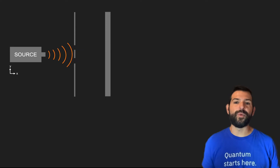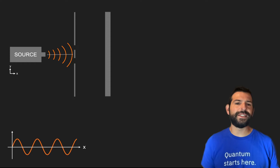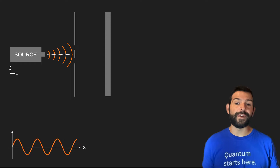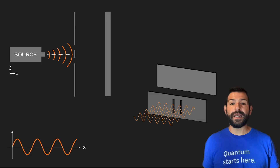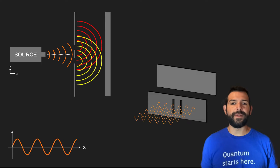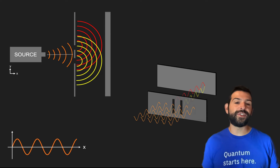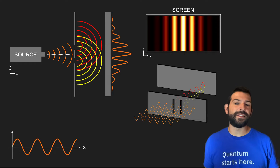On the other hand, if light is a wave — and here for simplicity we are assuming this is a monochromatic wave, so basically a wave of a single wavelength traveling from the source to the plate — it will generate two overlapping waves right past the slits that can interfere with each other.